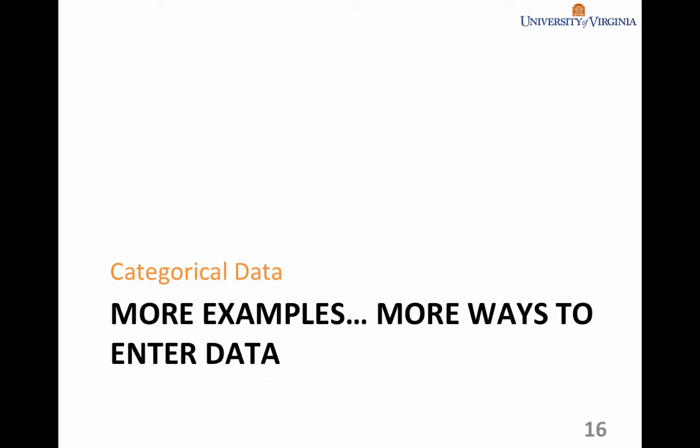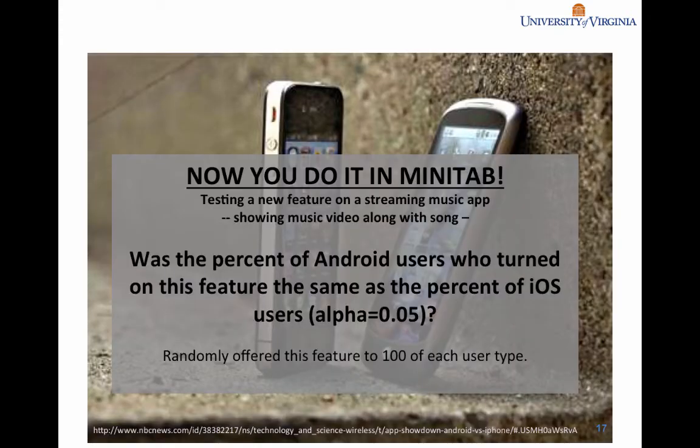We're going to work through some more examples of doing statistics when you don't have interval or ratio data. For this example, we have data on two different types of phone users, Android and iOS. They were each randomly offered a feature that would allow you to stream the music video along with music in a music streaming app, and we were looking at how many people turned on this feature. The question we wanted to answer was: was the percent of Android users who turned on this feature the same as the percent of iOS users who turned it on?